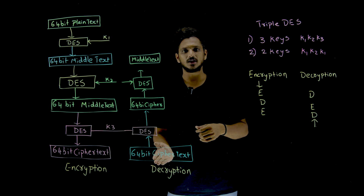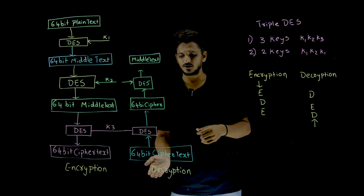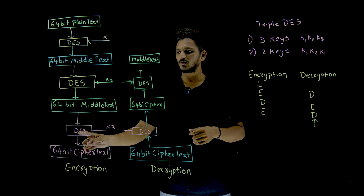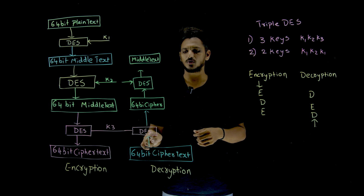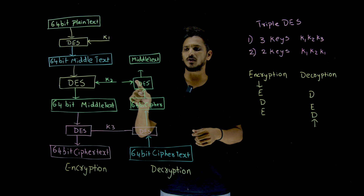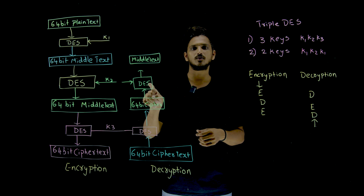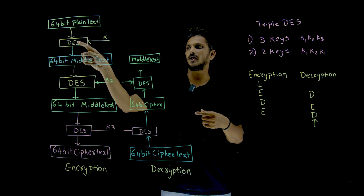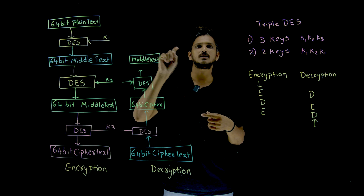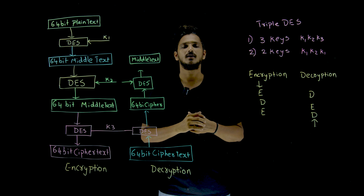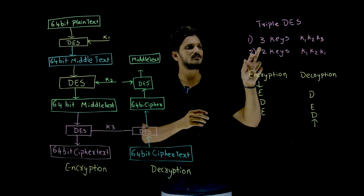During the decryption side, the operations are reversed: where we did encryption, we now do decryption; where we did decryption, we now do encryption; and where we did encryption again, we now do decryption. This gives us the DED (Decrypt-Encrypt-Decrypt) pattern on the decryption side. This is what Triple DES is about.